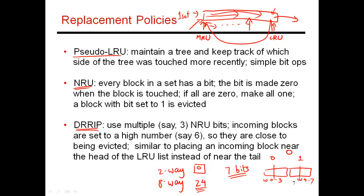A recent research paper called DRIP proposes that when a block is brought in, it should not be immediately placed in the MRU position, because many blocks brought into the last-level cache are evicted without ever being touched again. Instead, incoming blocks should be placed close to the end — not MRU and not LRU — giving the block a little lifetime in cache. If it gets touched, it moves up to MRU and enjoys a long lifetime; if not, it gets evicted quickly without wasting cache space.